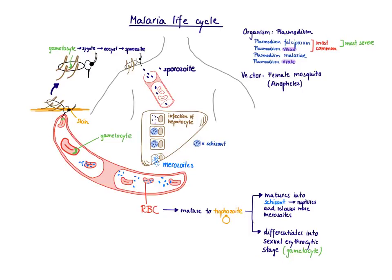In this video we're going to talk about the malaria life cycle. What are the organisms that can cause malaria? These are all Plasmodium species — they share the genus Plasmodium but differ in species name: Plasmodium falciparum, vivax, malariae, and ovale. Falciparum is the most fatal one — you can remember that falciparum stands for fatal. The most common species are falciparum and vivax.